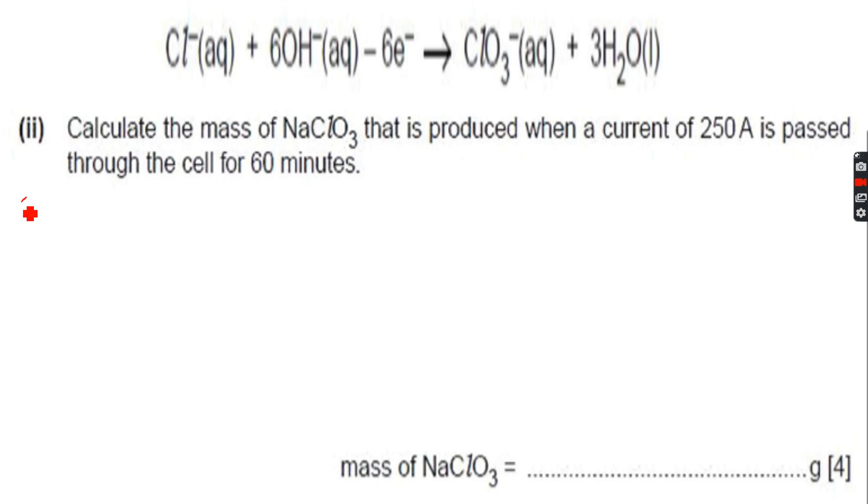First of all, we have current and time, so Q equals IT, which is 250 into 60 minutes, which we'll multiply by 60 again for seconds. So the charge will be 250 into 60 into 60, which when I do on my calculator I get 900,000 coulombs.